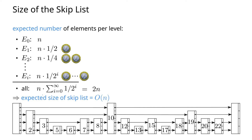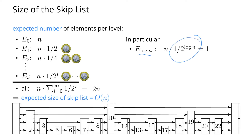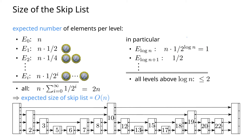What will be useful for us in the next analysis is looking at the high levels. At level log n, I have n times (1/2)^(log n) elements. Since 2^(log n) equals n, this is n times 1/n, which is 1 element in expectation. Taking all levels above log n gives another geometric series — 1, then 1/2, 1/4, and so on — giving a constant number of elements overall. We'll make use of that later.